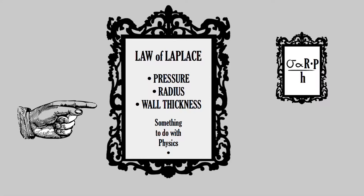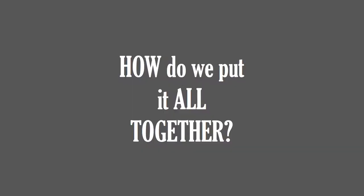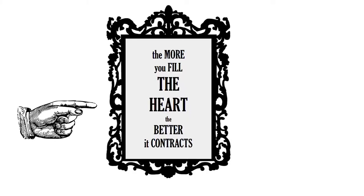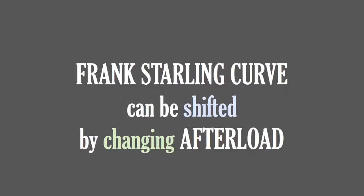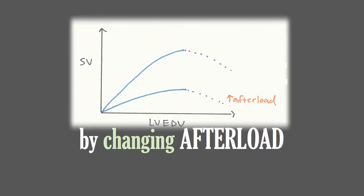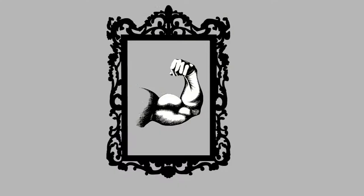The determinants of afterload are pressure, radius, and wall thickness. When you put them all together, we get the Law of Laplace, which is another famous equation. We've done all this physiology teaching — we know about afterload and preload. The Frank-Starling curve we talked about at the beginning holds true, but only for a given afterload. By changing the afterload — like when we force the heart to work harder against a stenotic valve or systemic hypertension — we shift the entire Frank-Starling curve up or down.